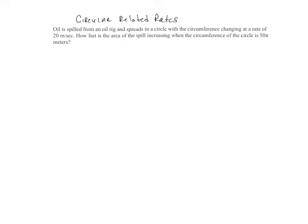So let's read the problem. Oil spilled from an oil rig and spreads in a circle with the circumference changing at a rate of 20 meters per second. How fast is the area of the spill increasing when the circumference of the circle is 50 pi meters?